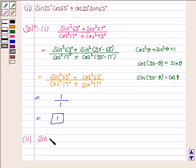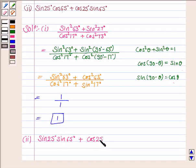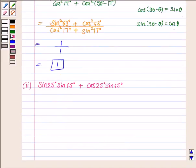The given expression for the second part is sin25°·sin65° + cos25°·cos65°. Again we observe that the sum of the angles here is 90°.